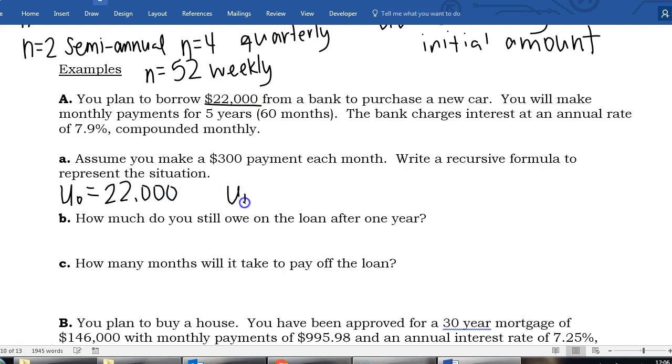And then we're going to write our general term u sub n equals u sub n minus one just like we always start our rules, times one plus now in this situation we're going to take our percent, our annual percent, but we're going to convert that to a decimal. So remember 7.9 percent is the same as 0.079, you have to move that decimal two places, fill in that spot with a zero. And then we're also going to be compounding monthly, that means n equals 12, so I'm going to divide by 12.